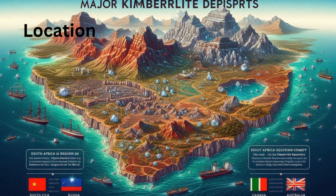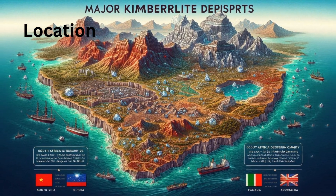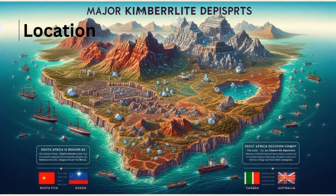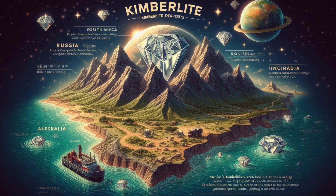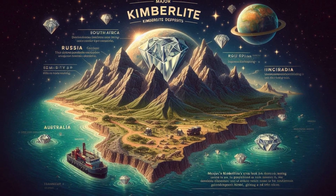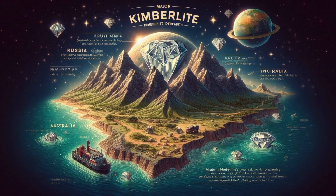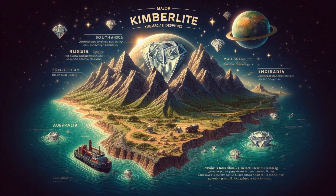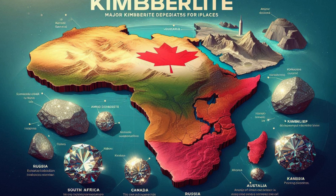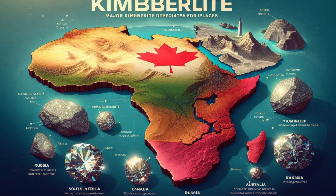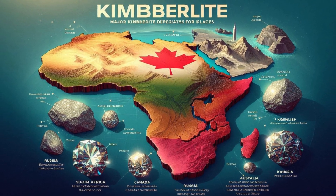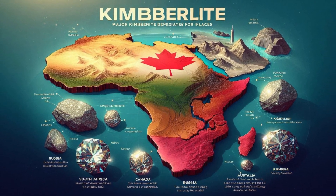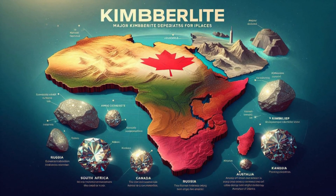Location: major kimberlite deposits are found in places like South Africa, Russia, Canada, and Australia. South Africa's kimberlite region is so famous for its diamond-bearing kimberlite that it gave the rock its name.